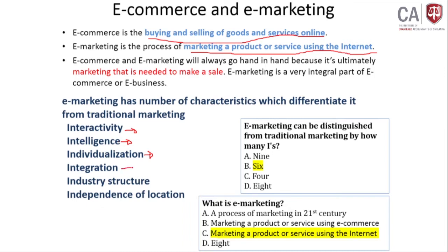Integration: you can integrate with different platforms; e-marketing payment gateways can also be integrated, and many technological systems can be involved. Industry structure: the industry structure must change when doing e-marketing — you need a good IT background and infrastructure. Independence of location: you do not need to worry about location — even if you are in Colombo, you can deal with people in rural areas or even in Australia or UK very quickly.